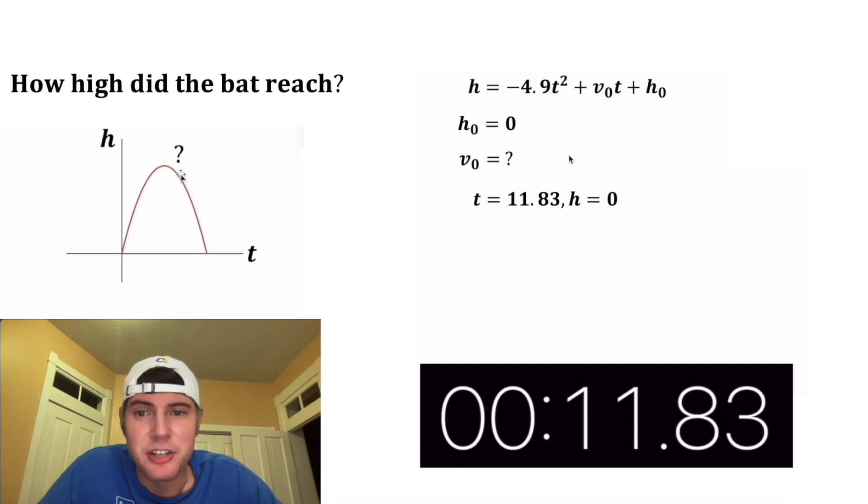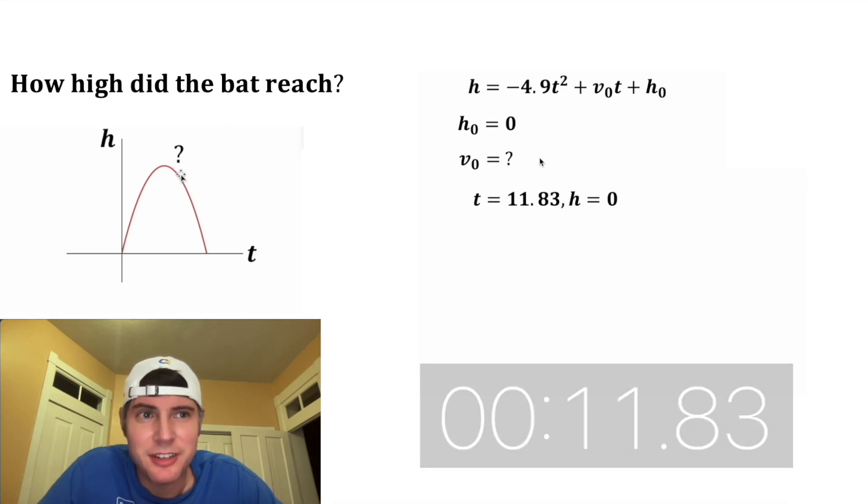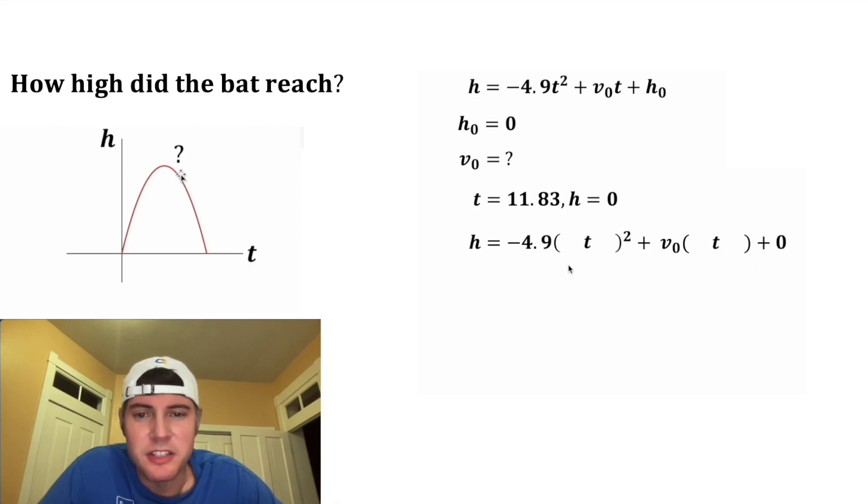Let's copy down our equation. Let's give ourselves some space. Let's plug in zero and in the place of these t's let's plug in 11.83, and in the place of the h let's plug in zero. Negative 4.9 times 11.83 squared is -685.75, and let's copy down everything else.